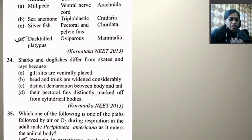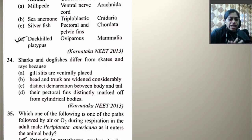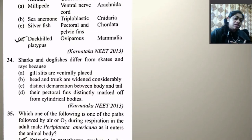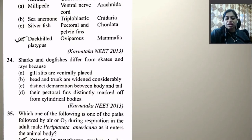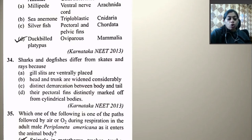Sharks and dogfishes differ from skates and rays because their pectoral fins are distinctly marked off from the cylindrical body. So the right option is D.